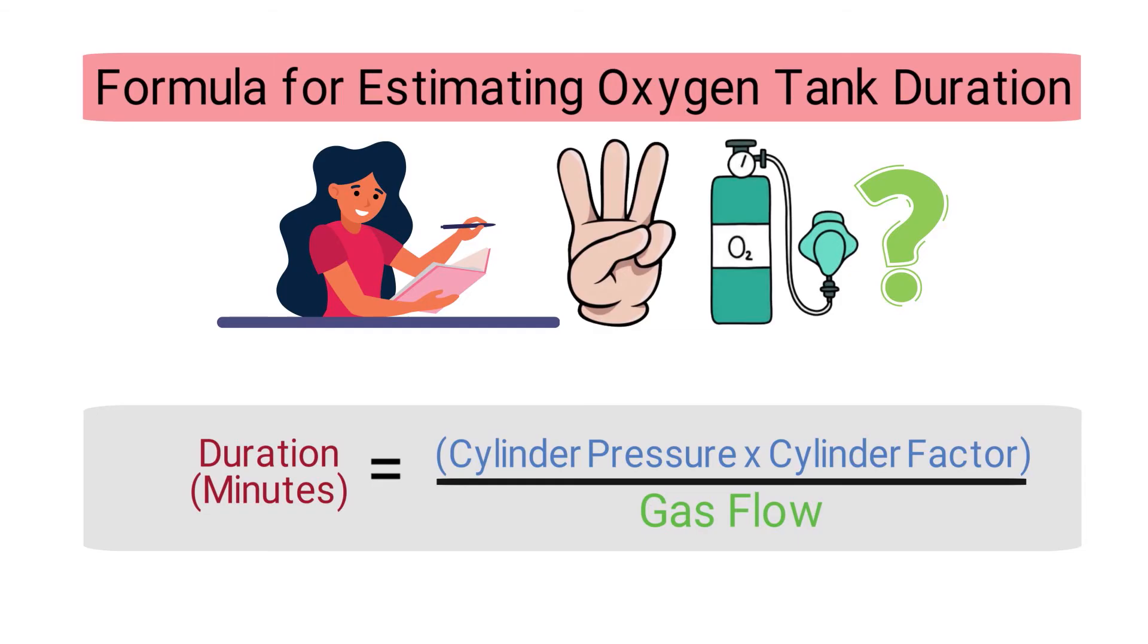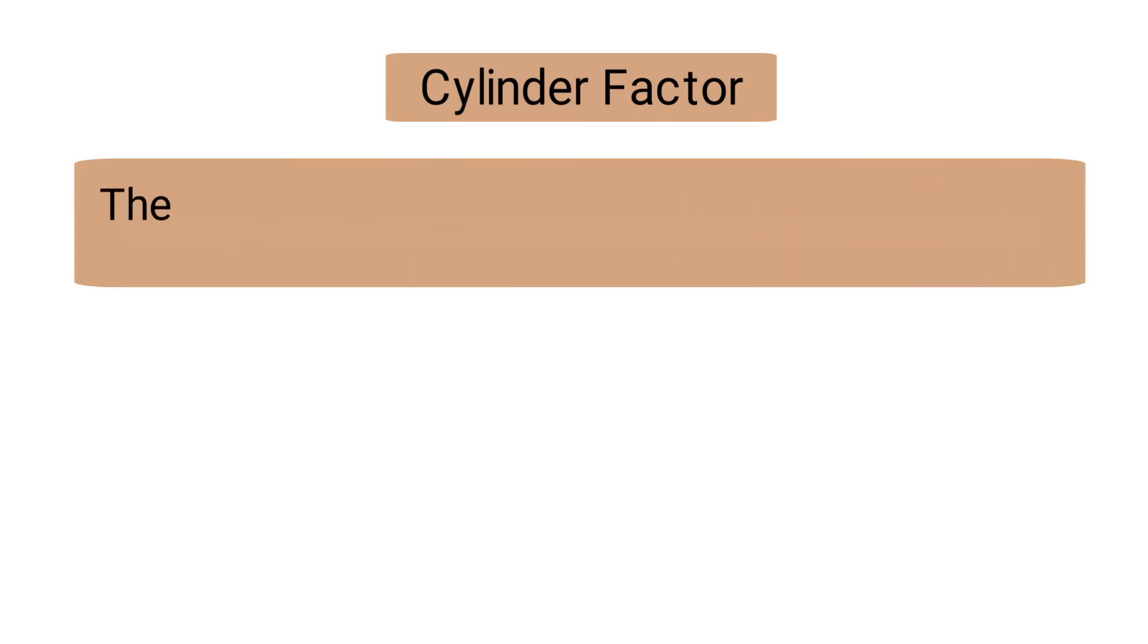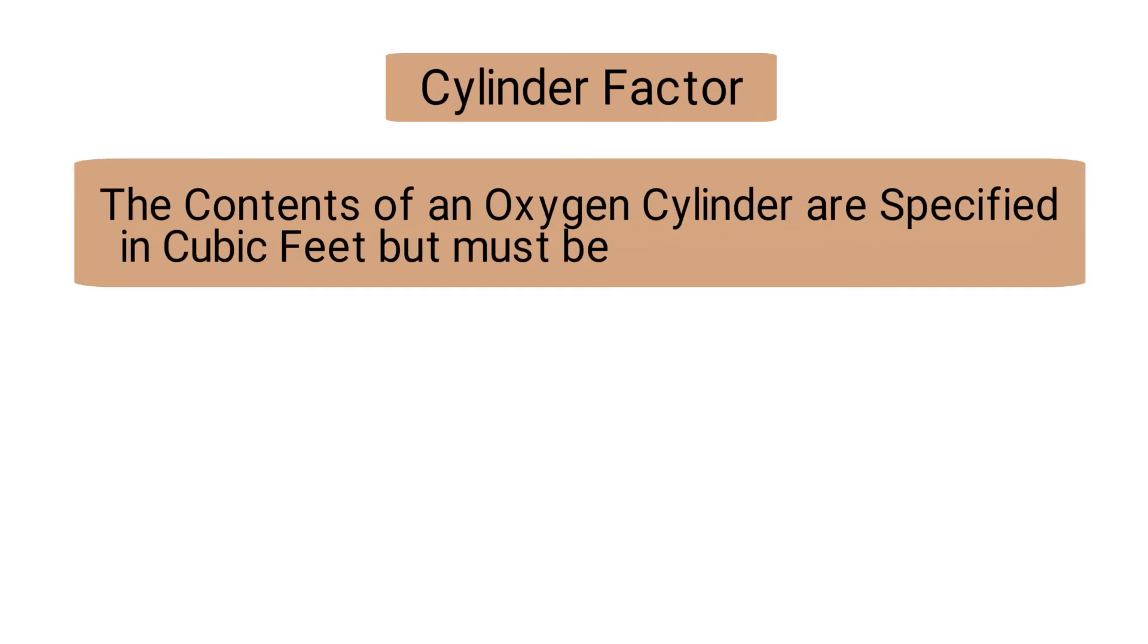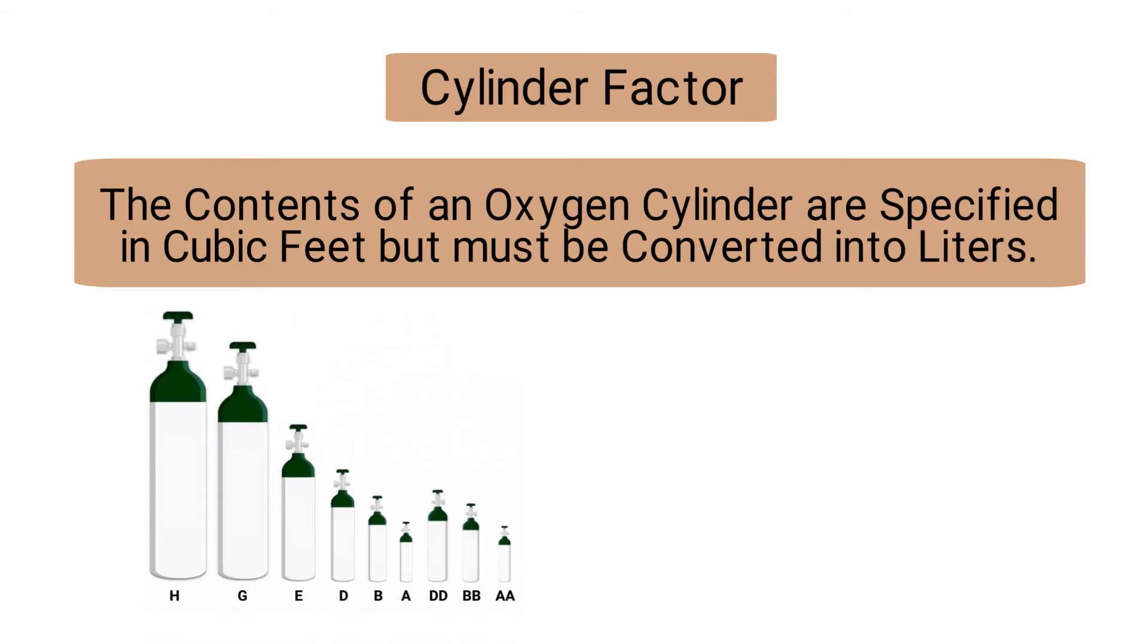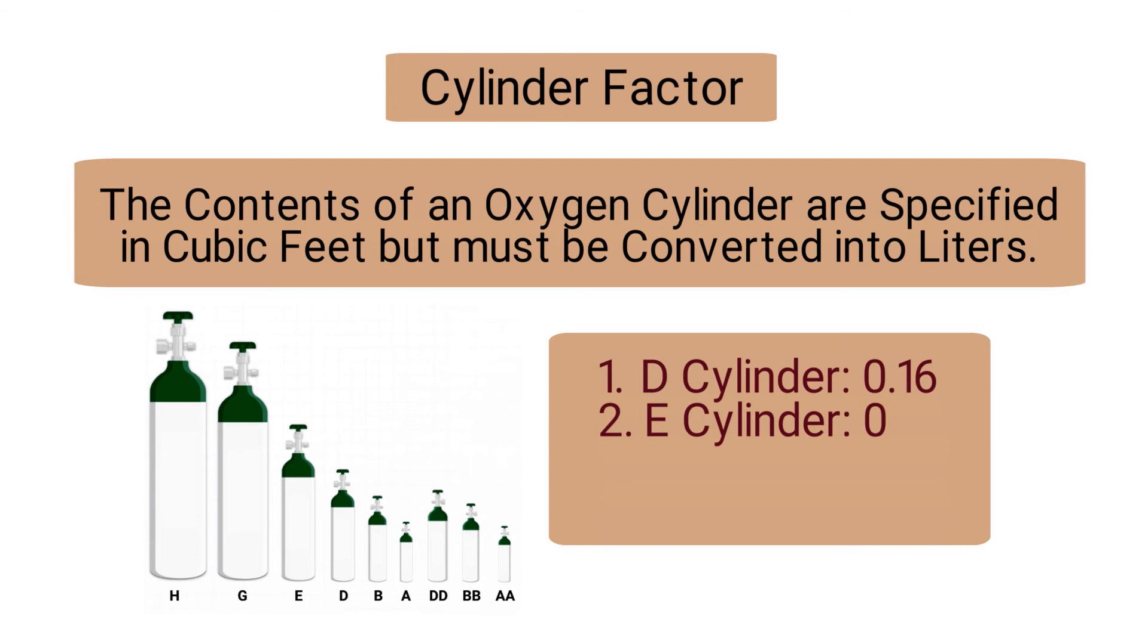We already mentioned the pressure and the flow, so now we need to talk about the cylinder factor. The contents of an oxygen cylinder are specified in cubic feet but must be converted into liters. Therefore, each tank size has a different cylinder factor: D cylinder is 0.16, E cylinder is 0.28, G cylinder is 2.41, and H cylinder is 3.14.